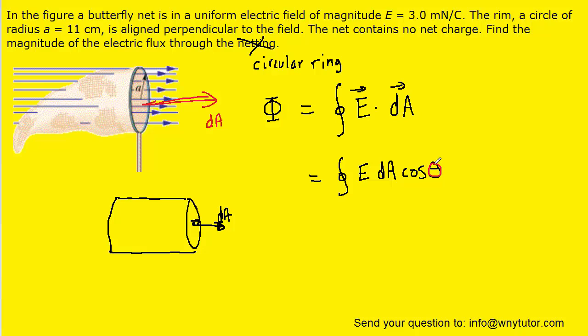And, of course, the cosine of zero degrees is one, so actually we can drop that from the integral. Furthermore, the electric field is a constant value, so we can actually remove it from the integral. And so we're left with just integrating dA.